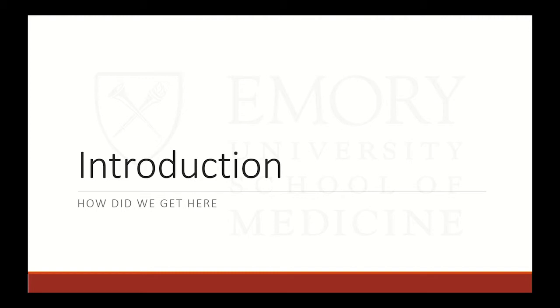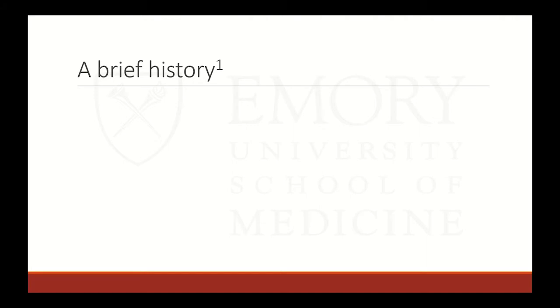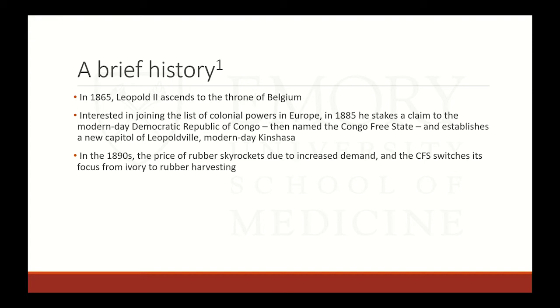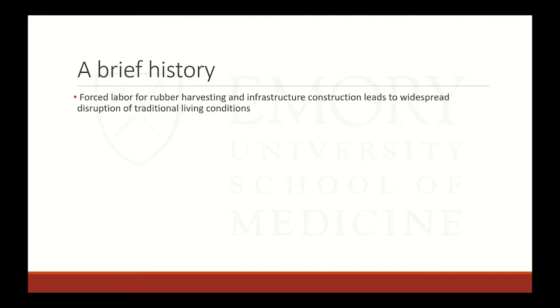So introduction — how did we get to where we are today? Like most horrible things that happened in the 20th century, HIV also begins with a 19th century European monarch. In this case, Leopold II, who in 1865 ascended the throne of Belgium. He was interested in joining the colonial powers of Europe, and in 1885 staked a claim to modern-day Democratic Republic of Congo, then named the Congo Free State, establishing the capital of Leopoldville in modern-day Kinshasa.